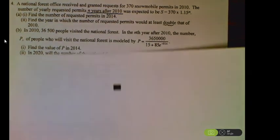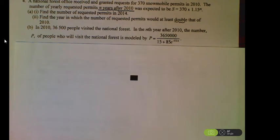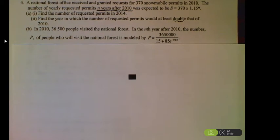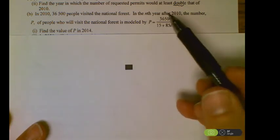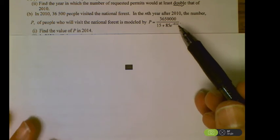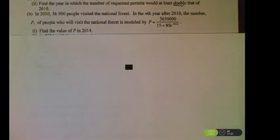Next part, in 2010, 36,500 people visited the forest. In the nth year after that, the number of people who visit is modeled by that function you see right there. First part of this, find the value of P in 2014. This is now represented by 4 years after 2010. So all you'd be doing is plugging in a 4 for n to get that solution. One thing to keep in mind, because people put these wrong in their calculator all the time, if you're going to do all of this in one shot, you've got to remember to put your entire denominator in parentheses. Otherwise, your calculator will do this divided by 15 first, and then add this at the end, and you're going to get something different.